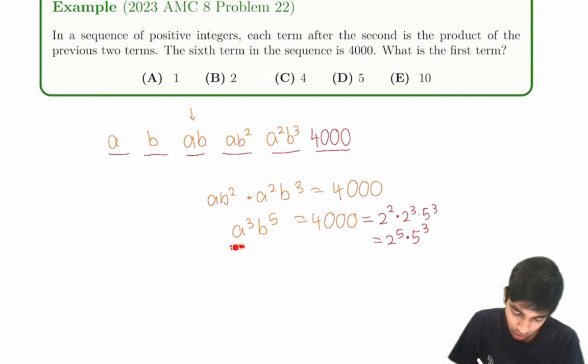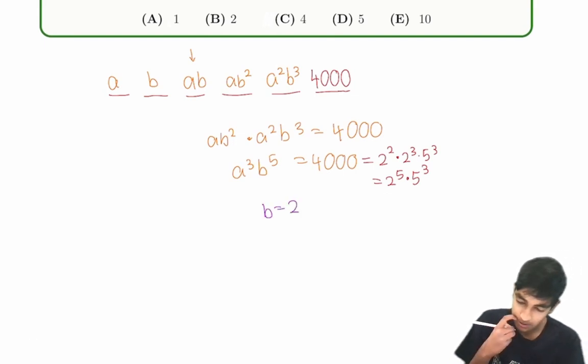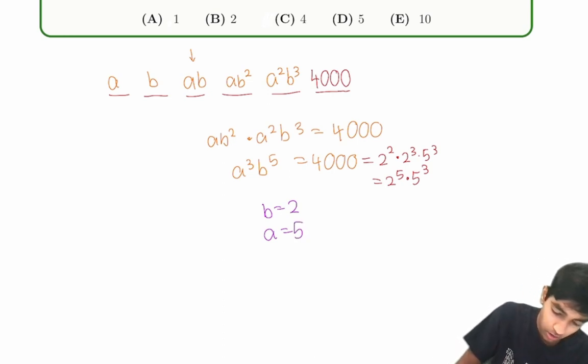A and B. Hmm, this seems oddly peculiar, doesn't it? 2 to the 5, 5 to the 3. B to the 5, A to the 3. Now, you probably can see that B equals 2 and A equals 5. Does that work? Well, let's try and plug it in.